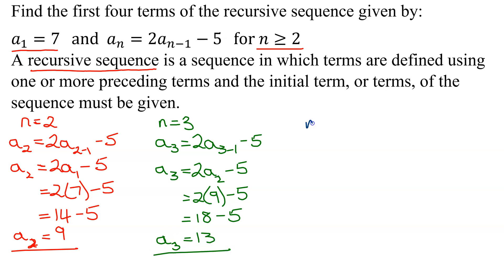Lastly, plugging in n equals 4, I have a sub 4, the fourth term, equals 2 times a sub n minus 1, 4 minus 1, minus 5. So the fourth term equals 2 times a sub 3, the third term, minus 5. So what is the third term?